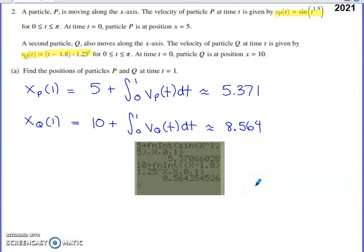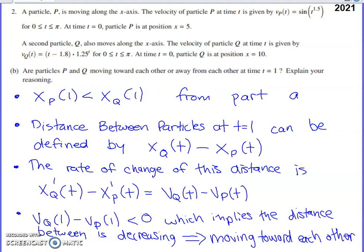Now, in the next part of the question, we're actually going to use some of this information. And the information that we're going to use is the fact that particle Q is further along the x-axis at time one than particle P is. So if we look at part B, they ask us to decide at time one, which we already determined the positions for in part A,